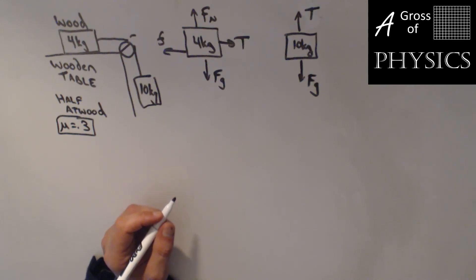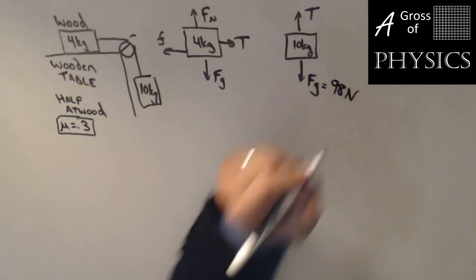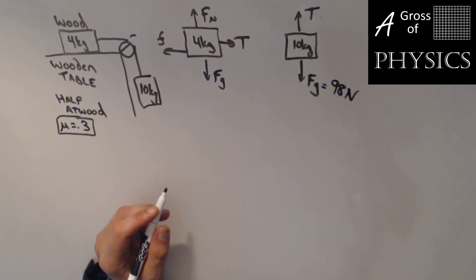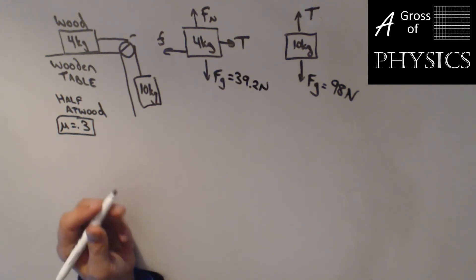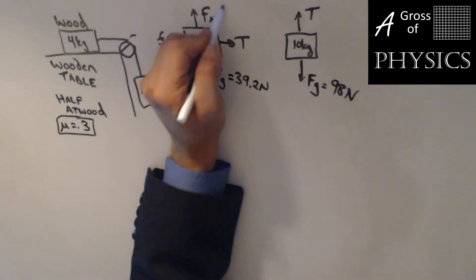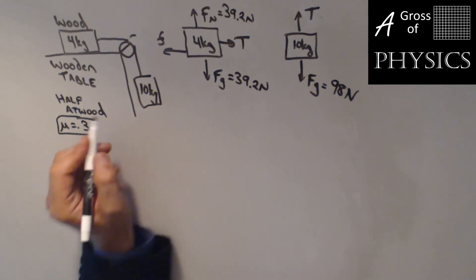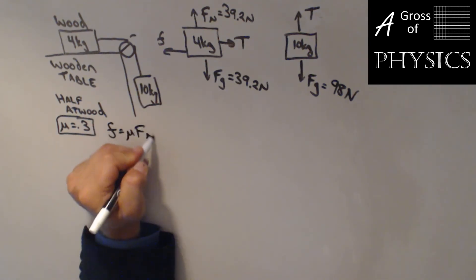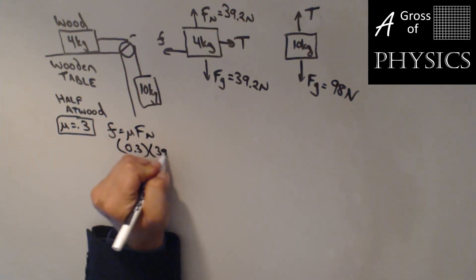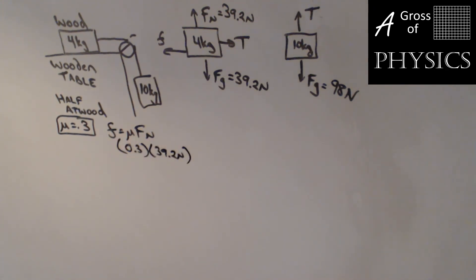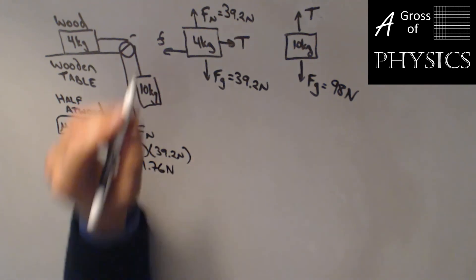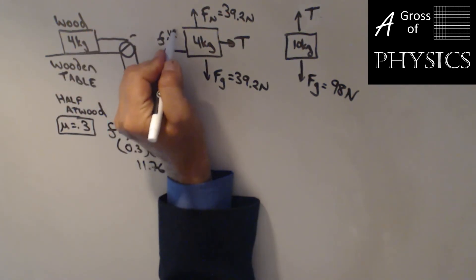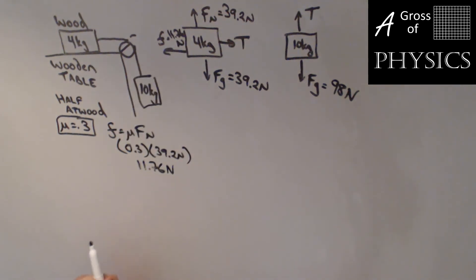Our first step, as always, is to figure out the force due to gravity. I'll do 10 times 9.8, which gives 98 N here. And 4 times 9.8 is 39.2 N. If this were an assessment, you'd want to show your work. The normal force is 39.2 here. Let's find friction, which is mu times Fn: 0.3 times 39.2 N. The answer is 11.76 N for friction. We have all the forces we know labeled.